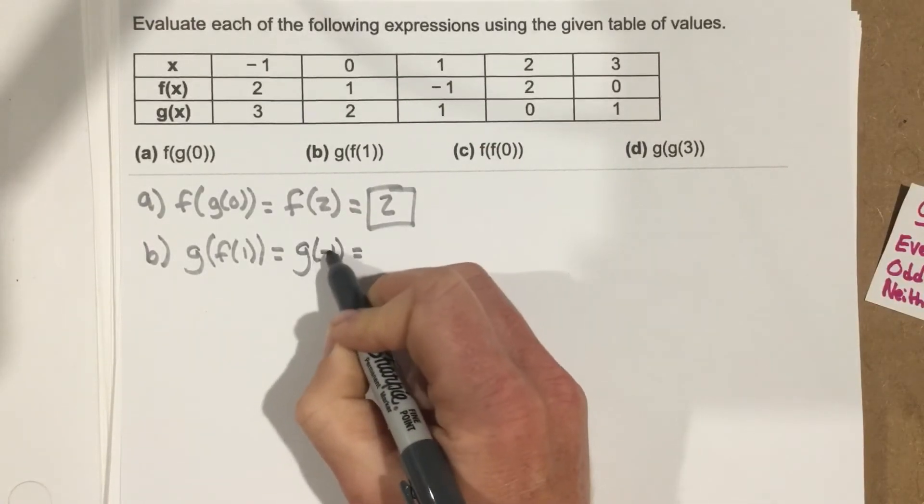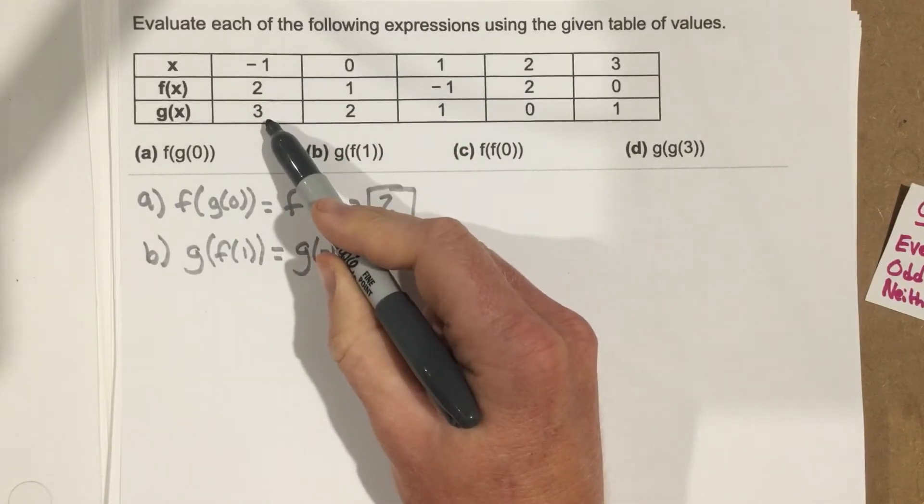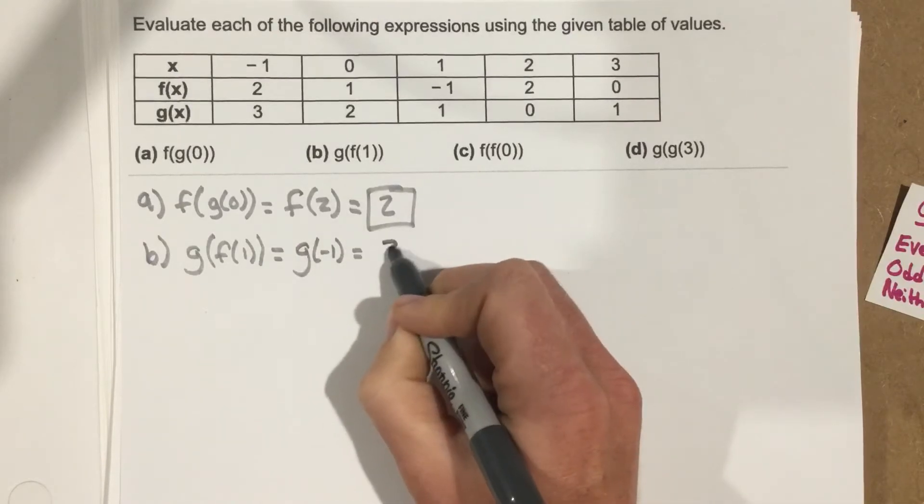So now I go to negative 1, and I see the g function's output is 3. So I end up with 3 for a solution.